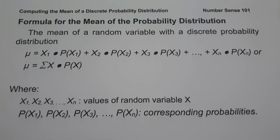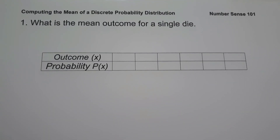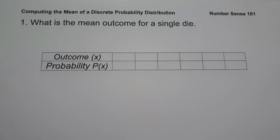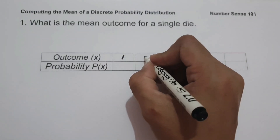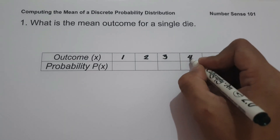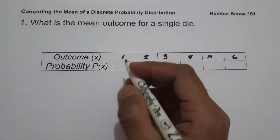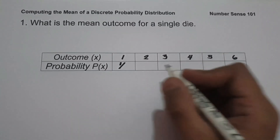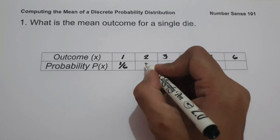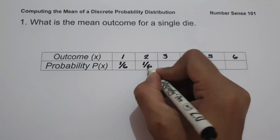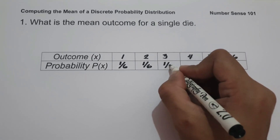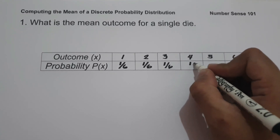Let's start with example number 1: What is the mean outcome for a single die? To find the mean outcome, the first step is to identify all the possible outcomes in a die. There are six possible outcomes: 1, 2, 3, 4, 5, and 6. The probability of getting 1 is 1 over 6, the probability of getting 2 is 1 over 6, the probability of getting 3 is 1 over 6, and the probability of getting 4 is 1 over 6.